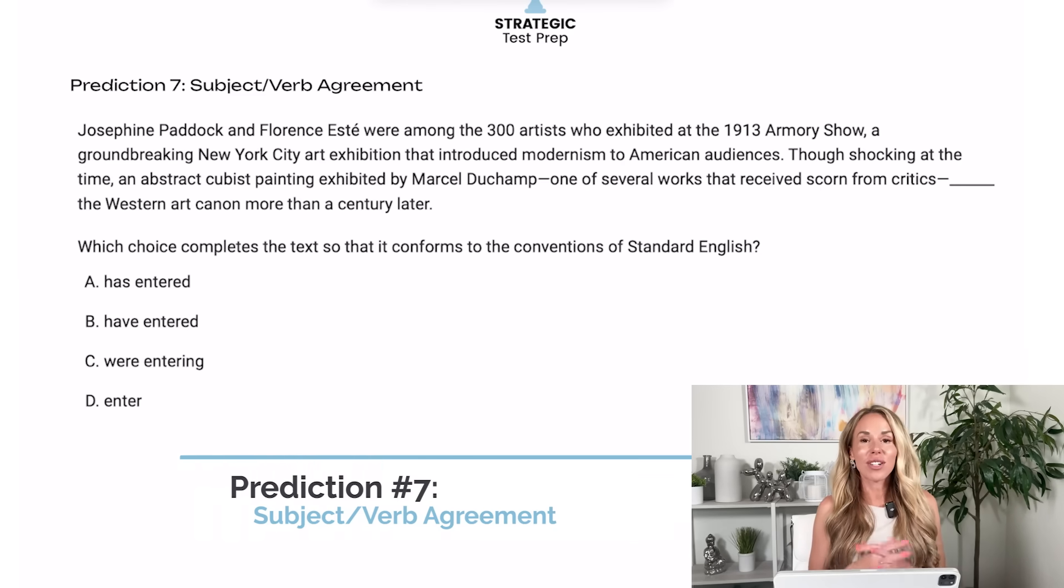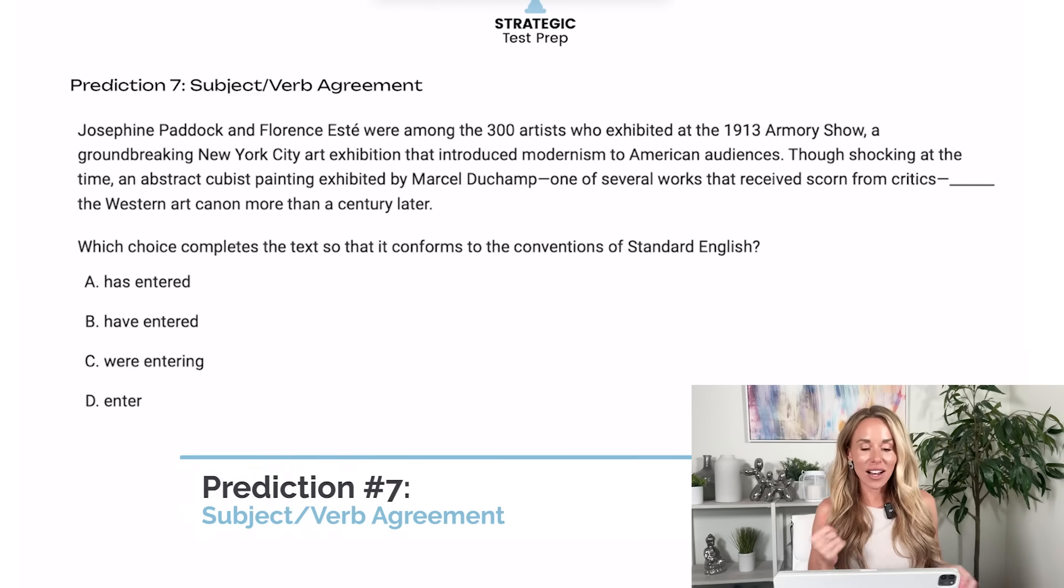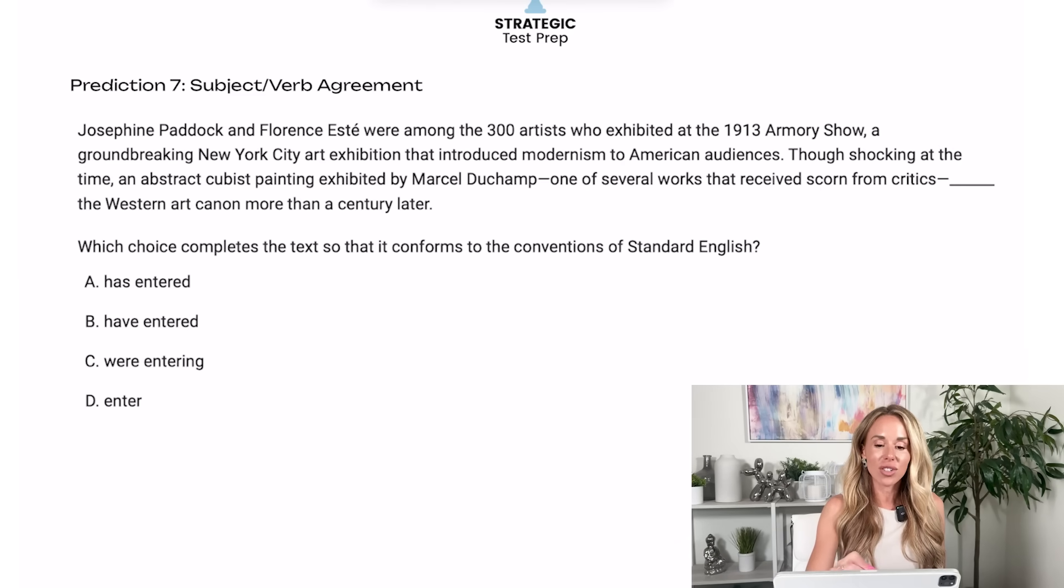All right. Prediction seven. I think you're going to have a subject verb agreement question on your test. So when you look at your answer choices and they're all verbs, use the pronoun trick. You're going to use he and they. If there's a difference between singular and plural tenses, the one that is different is right. So I would say he has entered, they have entered, they were entering, they enter. The answer is going to be A.